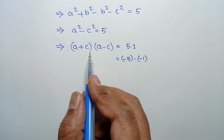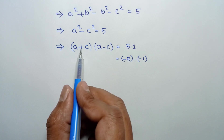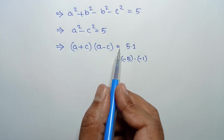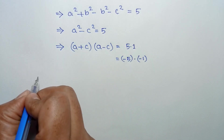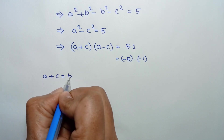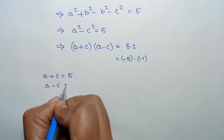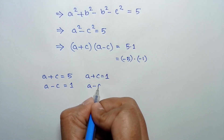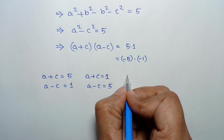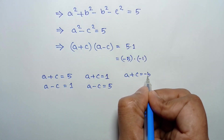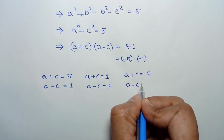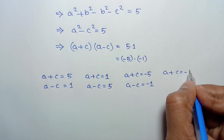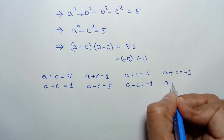For integer solutions, we compare left and right side. When a plus c equals 5, then a minus c equals 1. When a plus c equals 1, then a minus c equals 5. When a plus c equals negative 5, then a minus c equals negative 1. And when a plus c equals negative 1, then a minus c equals negative 5.